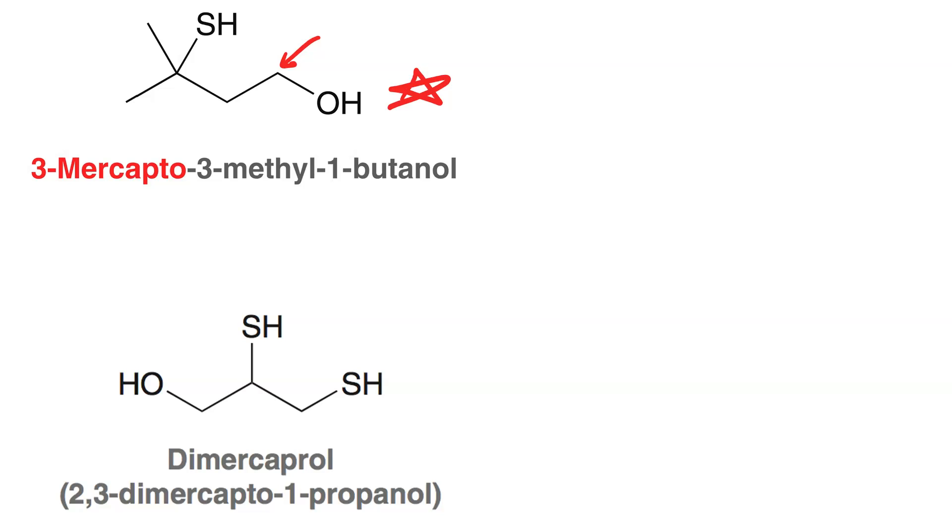So 1-butanol is the parent and there is a sulfhydryl group on carbon-3. So hence we call this 3-mercapto-3-methyl-1-butanol.